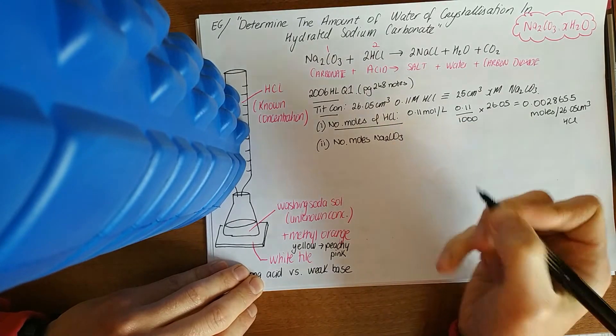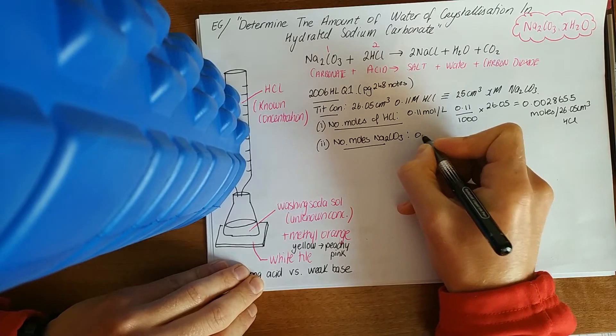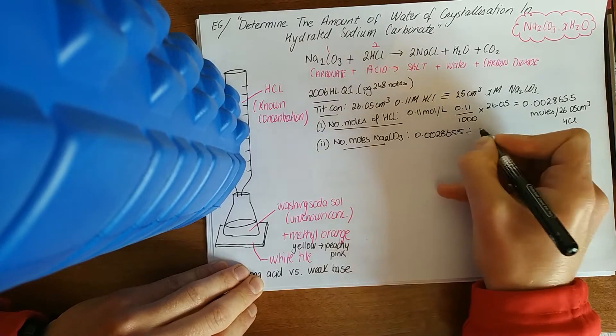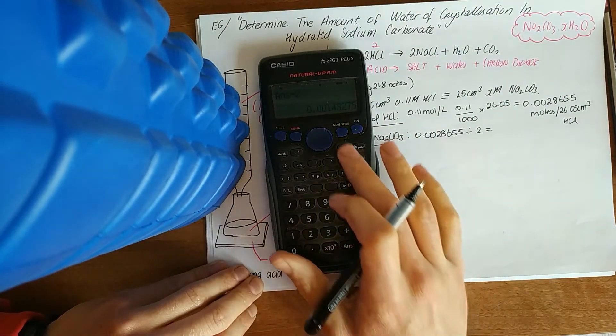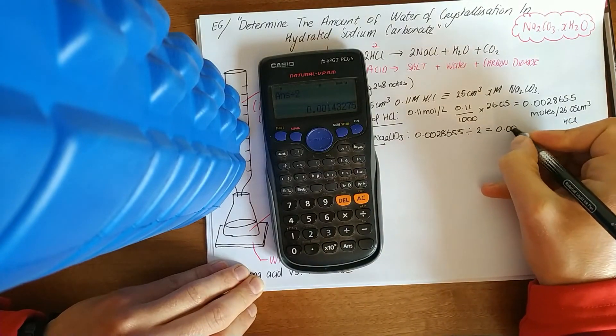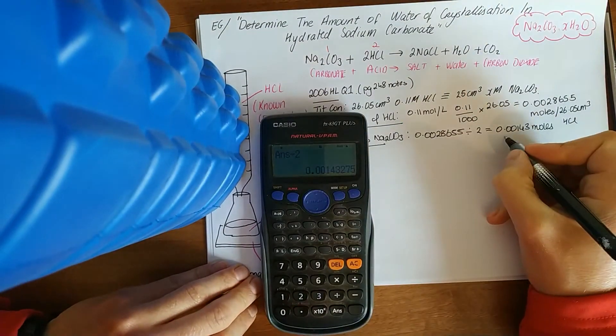The number of moles of Na2CO3, they'll probably say per 25 centimeters cubed. Just divide that by 2. So 0.0028655, divide that by 2, and just never delete the number in your calculator. I get 0.00143 moles.